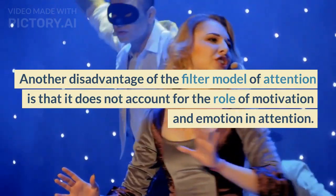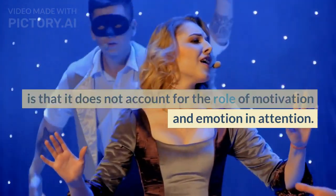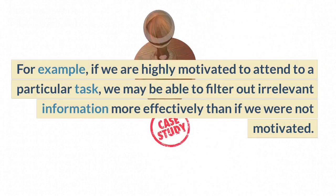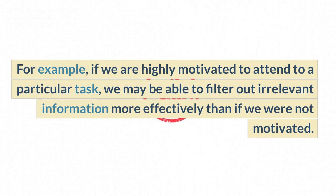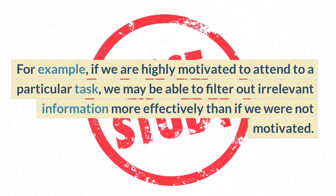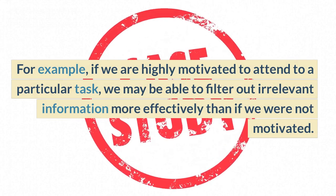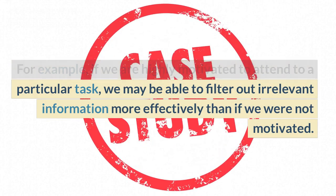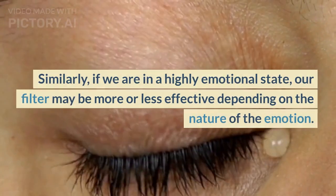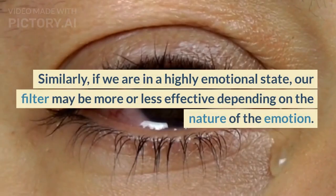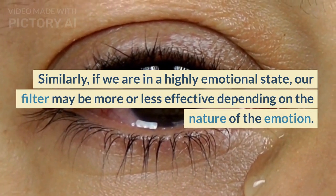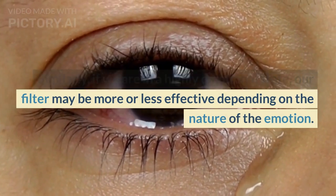Another disadvantage of the filter model is that it does not account for the role of motivation and emotion in attention. For example, if we are highly motivated to attend to a particular task, we may be able to filter out irrelevant information more effectively than if we were not motivated. Similarly, if we are in a highly emotional state, our filter may be more or less effective depending on the nature of the emotion.